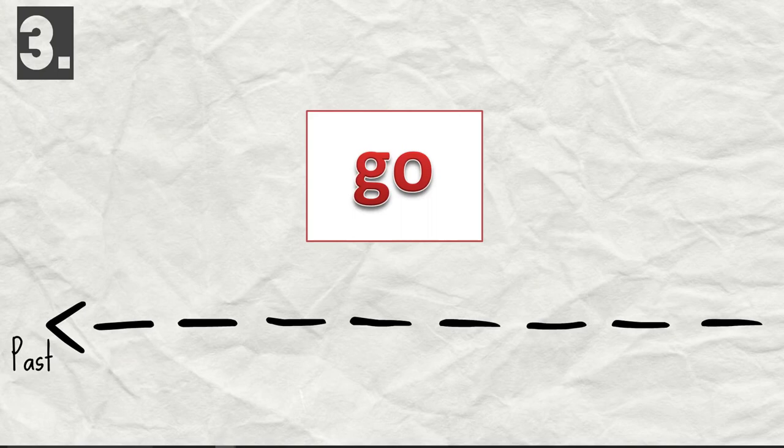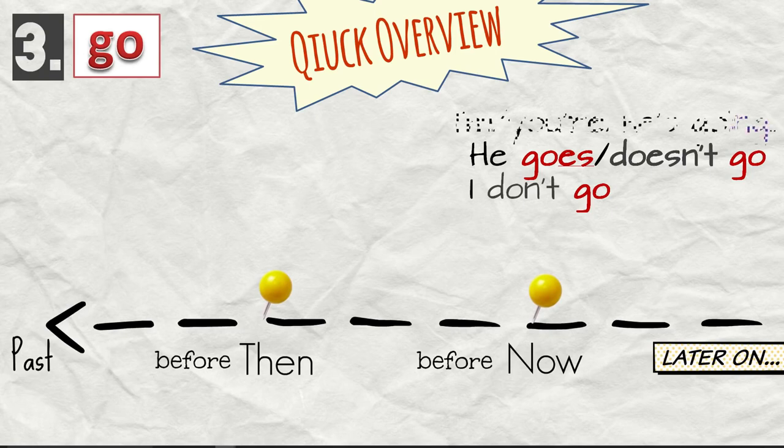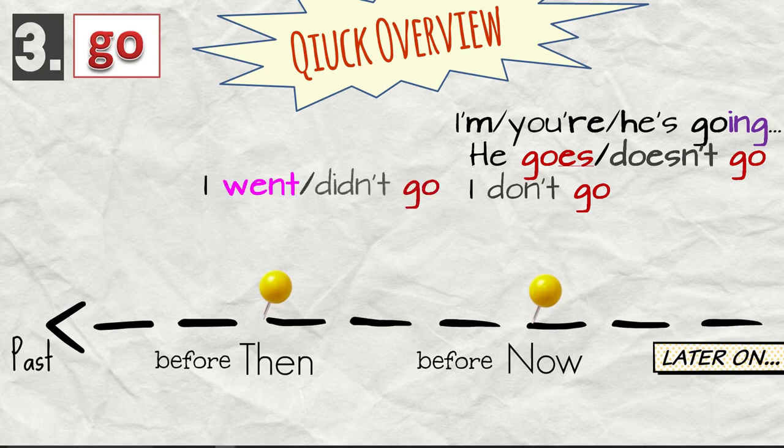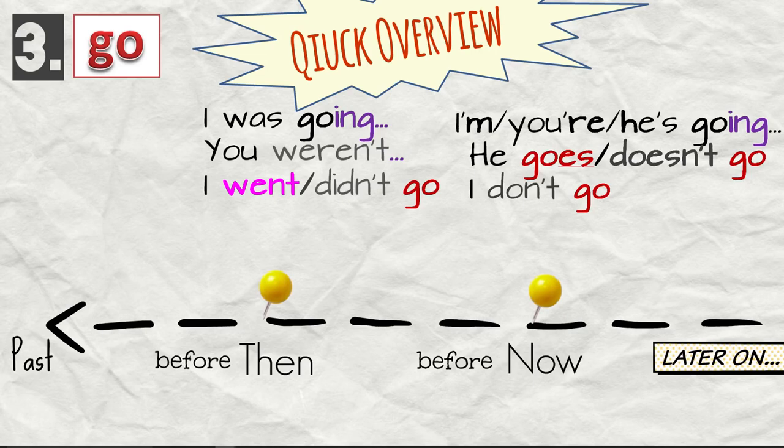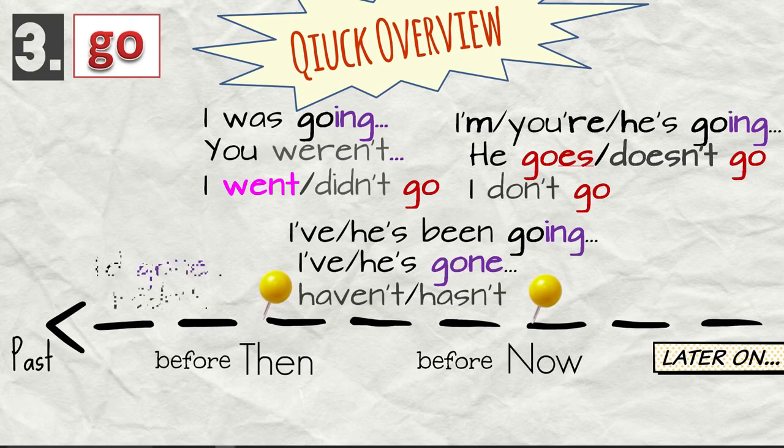Go. Quick overview. He goes. I go. Or he doesn't go. I don't go. I'm going. You're going. He's going. I went. Or I didn't go. I was going. You were going. Or you weren't going. I've gone. He's gone. I've been going. He's been going. I'd gone. I'd been going. So let's have a look at the examples again.